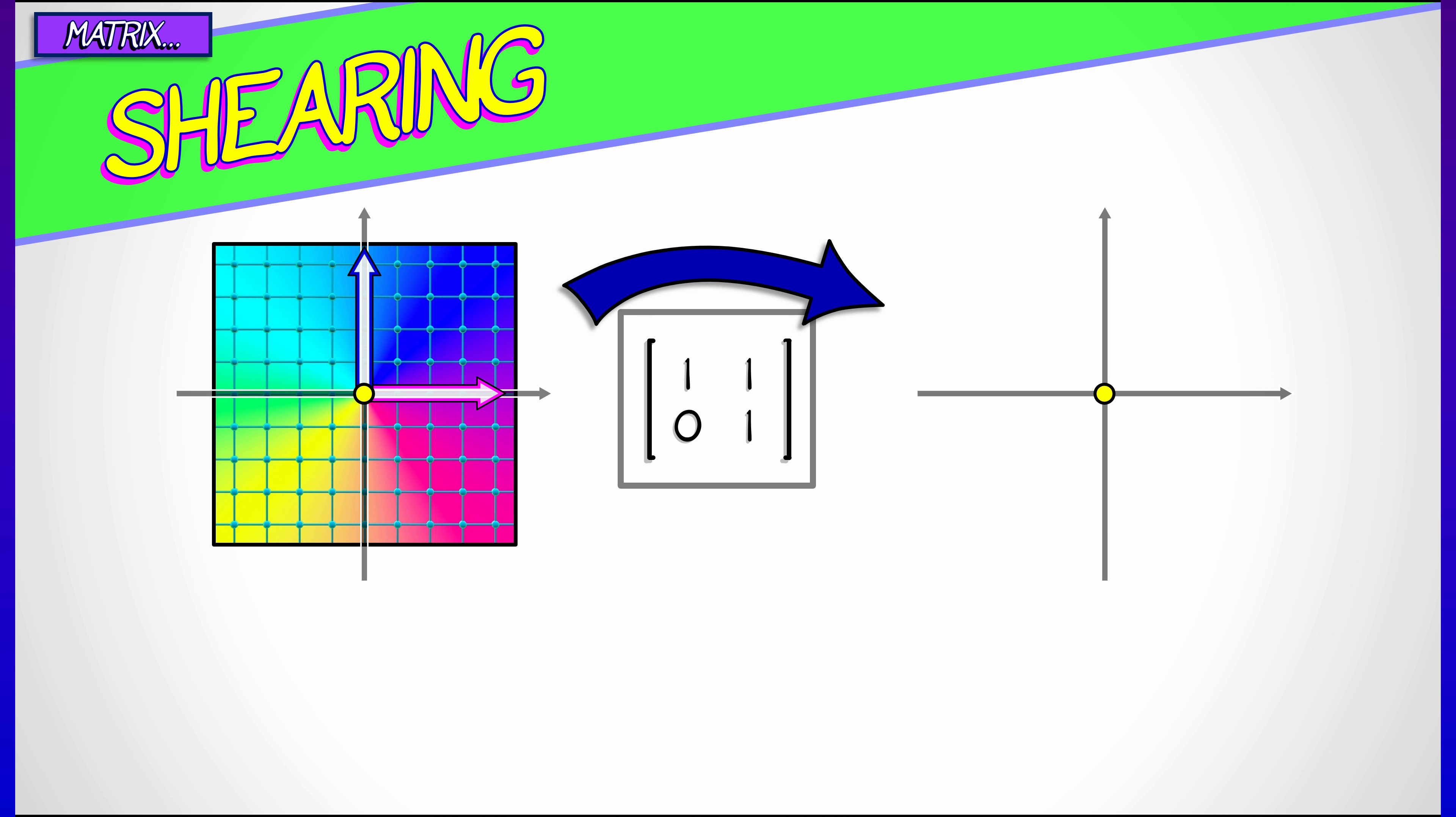Okay, next comes an interesting but a little bit hard to see sort of matrix. This is called a shearing transformation. Consider 1, 1, 0, 1. What does this do to the basis vectors?